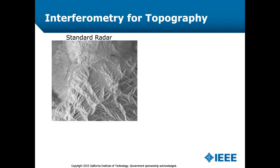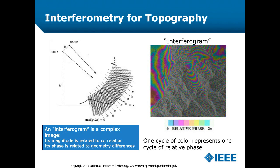Here's a standard SAR image where the brightness is related to slopes on the surface and the intrinsic reflectivity at radar wavelengths. If you add a second image acquired from a slightly different vantage point separated by a baseline B, you can combine those two into what we call an interferogram — a phase difference map. That interferogram, in this particular case, encodes the topography of the surface. It looks very much like a colorized topographic map, and that's exactly what it is.